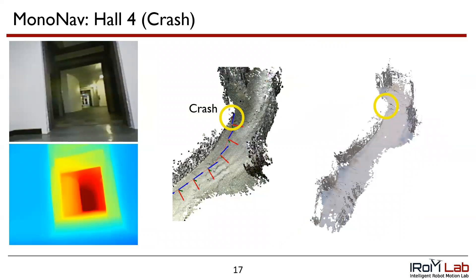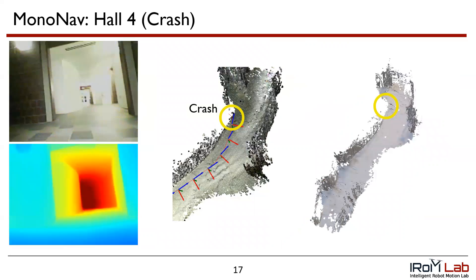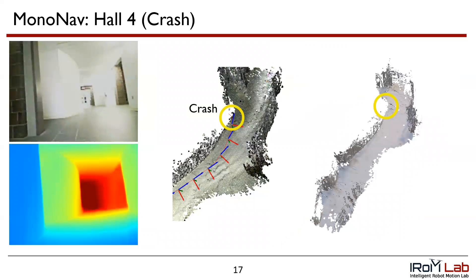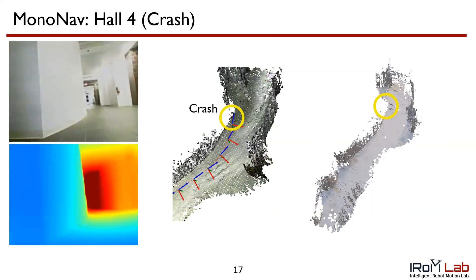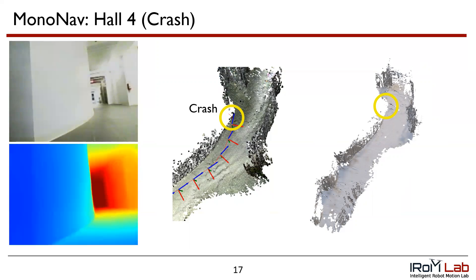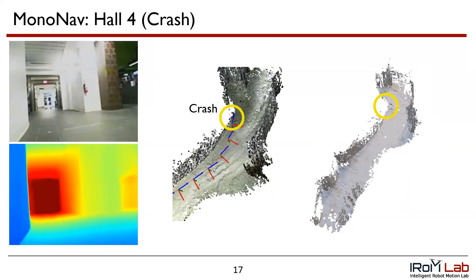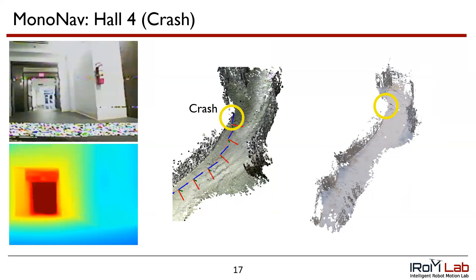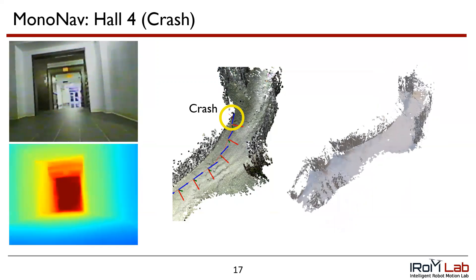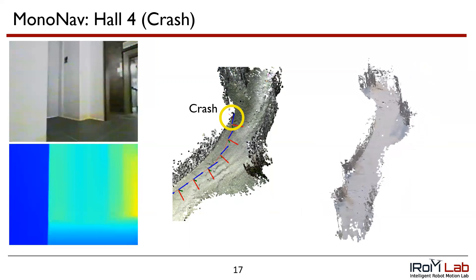Now we analyze the case where MonoNav crashed. As the drone passes the curved wall on the left-hand side — the same environment as in the previous reconstruction example — the wall occludes what lies beyond. In addition, the smooth white curved wall surface is really difficult for ZoeDepth to analyze. As a result, the drone turns into what it thinks is empty space. This is a fundamental challenge in monocular depth estimation, which could possibly be addressed by more cautious or slower primitives.